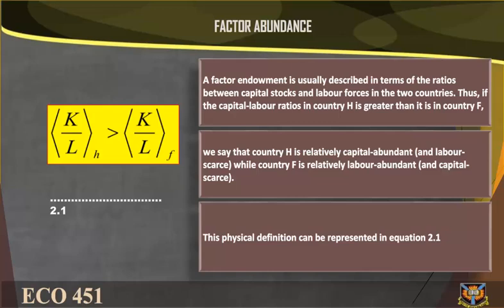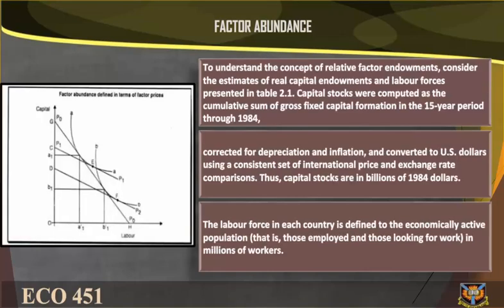This physical definition can be represented in equation 2.1. To understand the concept of relative factor endowment, consider the estimates of real capital endowments and labor forces represented in table 2.1. Capital stocks were computed as a cumulative sum of gross fixed capital formation in the 15-year period to 1984, corrected for depreciation and inflation, and converted to U.S. dollars using a consistent set of international price and exchange rate comparisons. Thus, capital stocks are in billions of 1984 dollars.